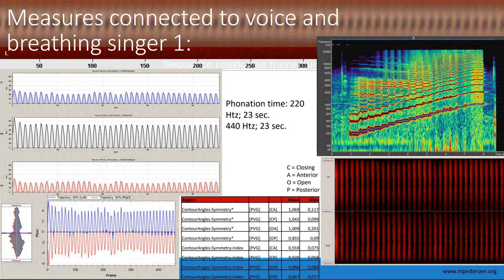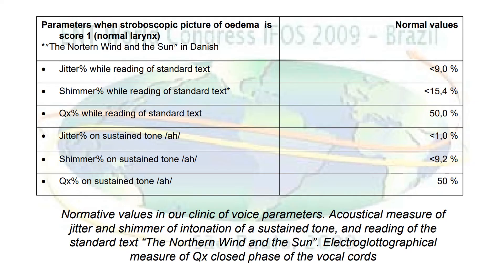Even in the phonovibrogram underneath, you can see a variation related to jitter and possibly shimmer. These measurements were of a qualified singer. We have earlier tried to evaluate the perturbation parameters during reading — called jitter and shimmer — because we wanted to know the effect on continuous speech. In our clinic, the results were that during reading the amplitude variation was less than 15.4%, as seen in the table.